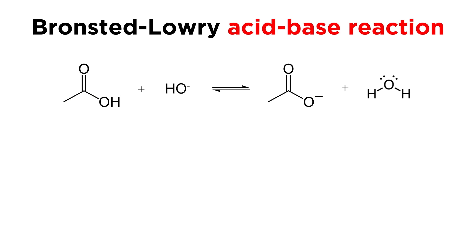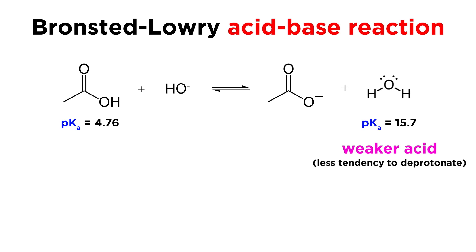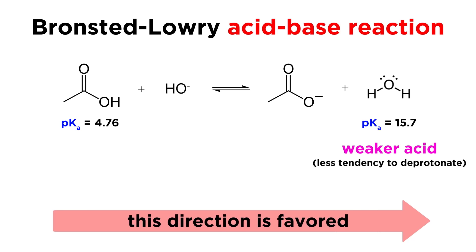Here's another example: acetic acid and the hydroxide ion producing the acetate ion and water. Acetic acid has a pKa of 4.76, while water has a pKa of 15.7. This means that acetic acid is more likely to deprotonate than water by about 11 orders of magnitude, which means the forward direction is dominant.